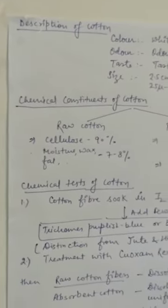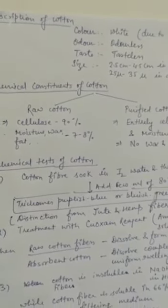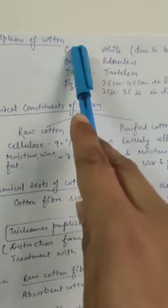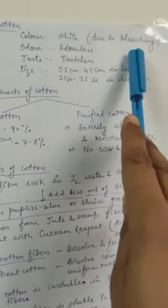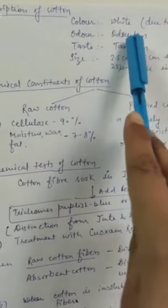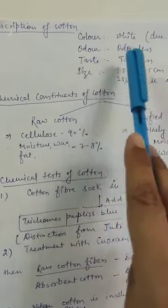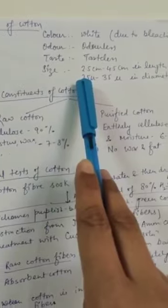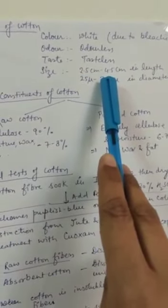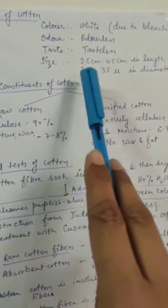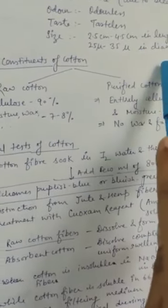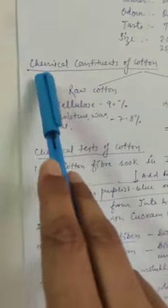Now description of cotton. Color: white due to bleaching. Odor: odorless. Taste: tasteless. Size: 2.5 to 4.5 cm in length and 25 to 35 micron in diameter.